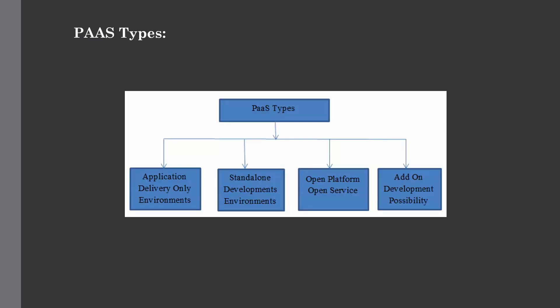The last topic is PaaS types. Based on their functions, PaaS can be classified into four main types. The first is the standalone development environment, which works as an independent entity for some specific function and does not include licensing or technical dependencies on specific SaaS applications. The second is the application delivery only environment, which includes on-demand scaling and application security as per the tasks being performed on the services.